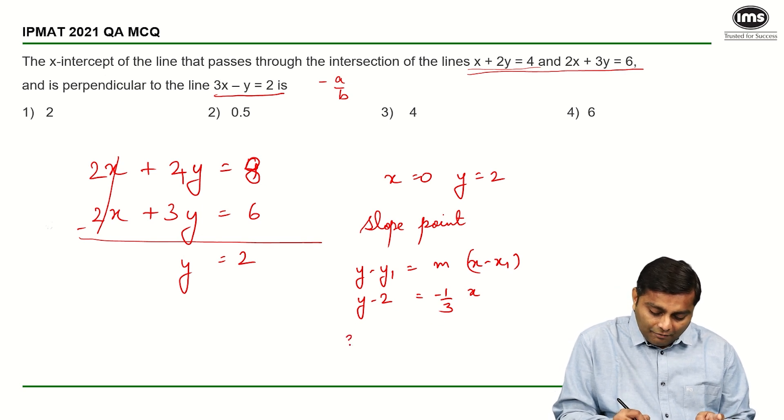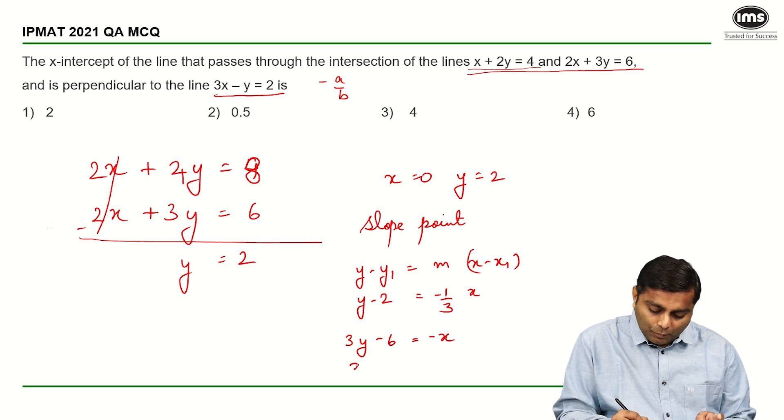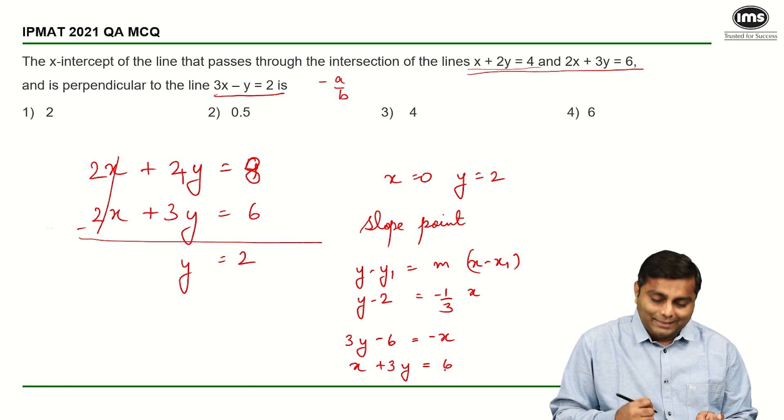So what we have is 3y minus 6 is equal to minus x. So the equation of the line is going to become x plus 3y is equal to 6.